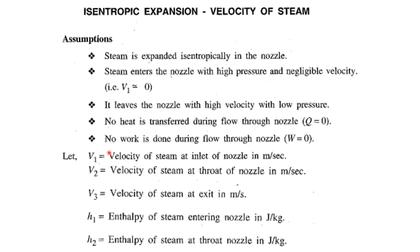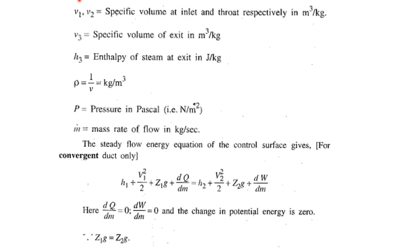Now let us consider the derivation of the velocity of steam through the nozzle. Let V1 be the velocity of steam at the inlet of nozzle, V2 velocity at the throat of nozzle, V3 velocity at the exit. Density ρ equals 1/ν that is reciprocal of the specific volume. Pressure P is taken in Pascals and m dot is the mass flow rate of the steam through the nozzle.